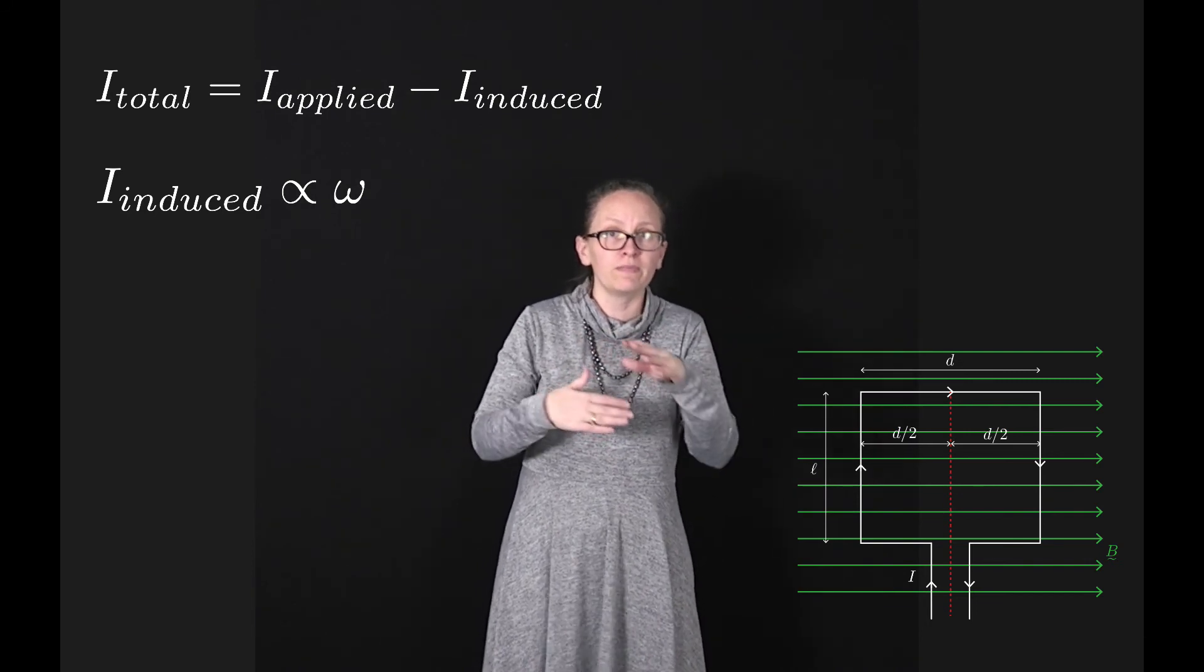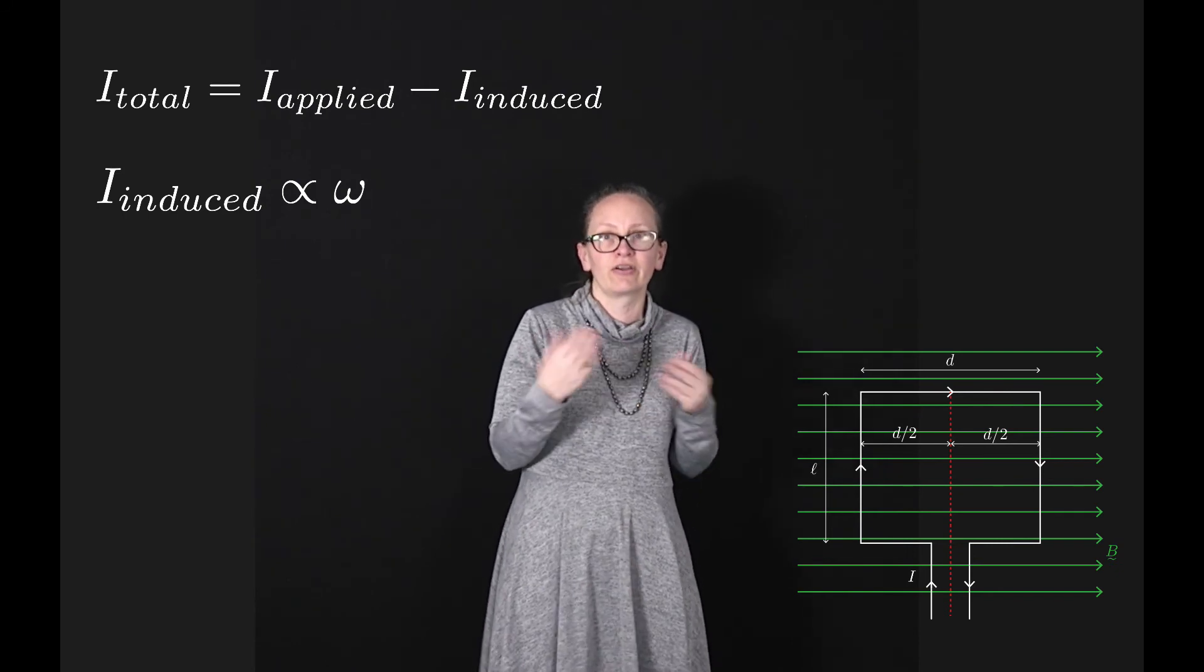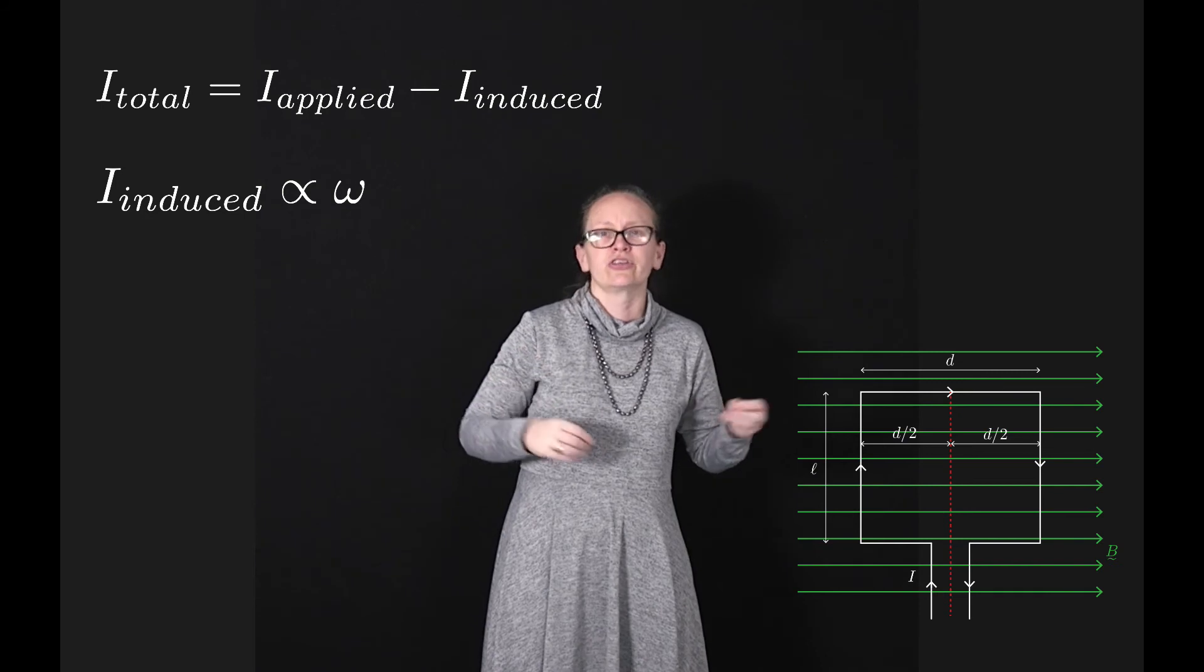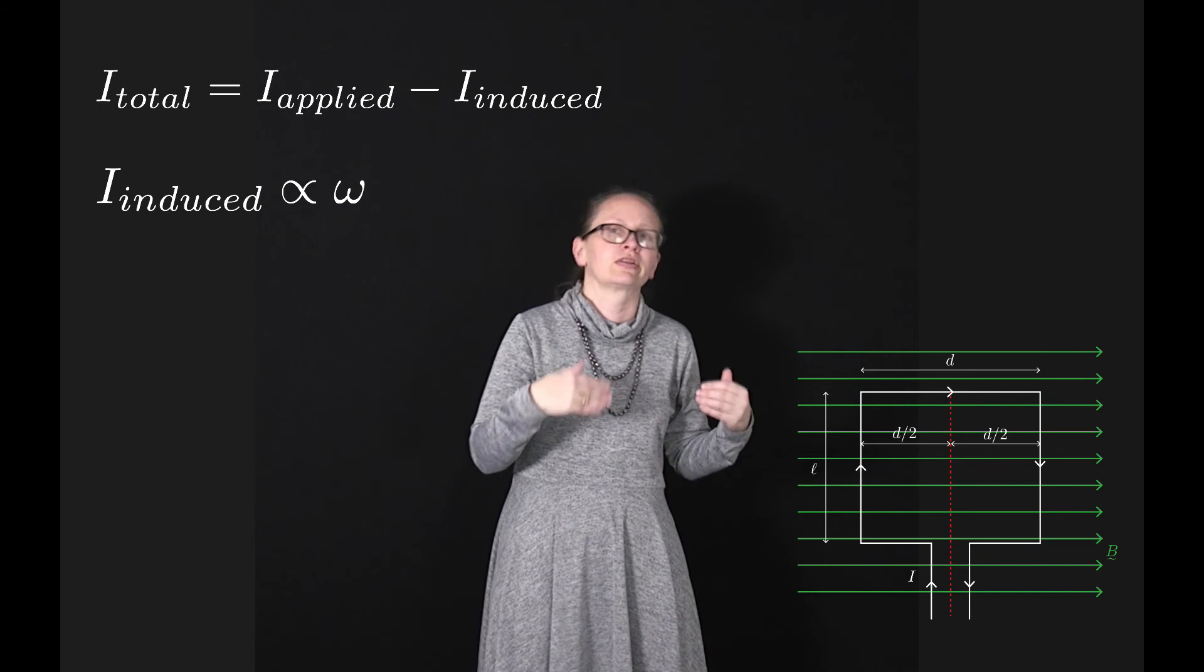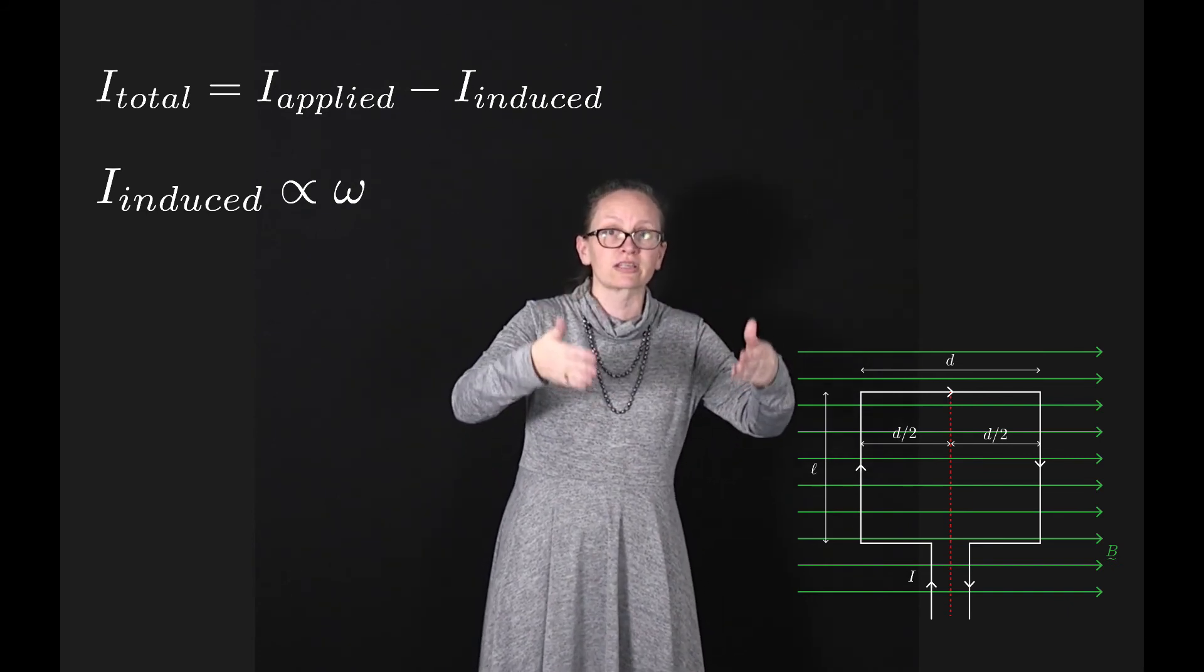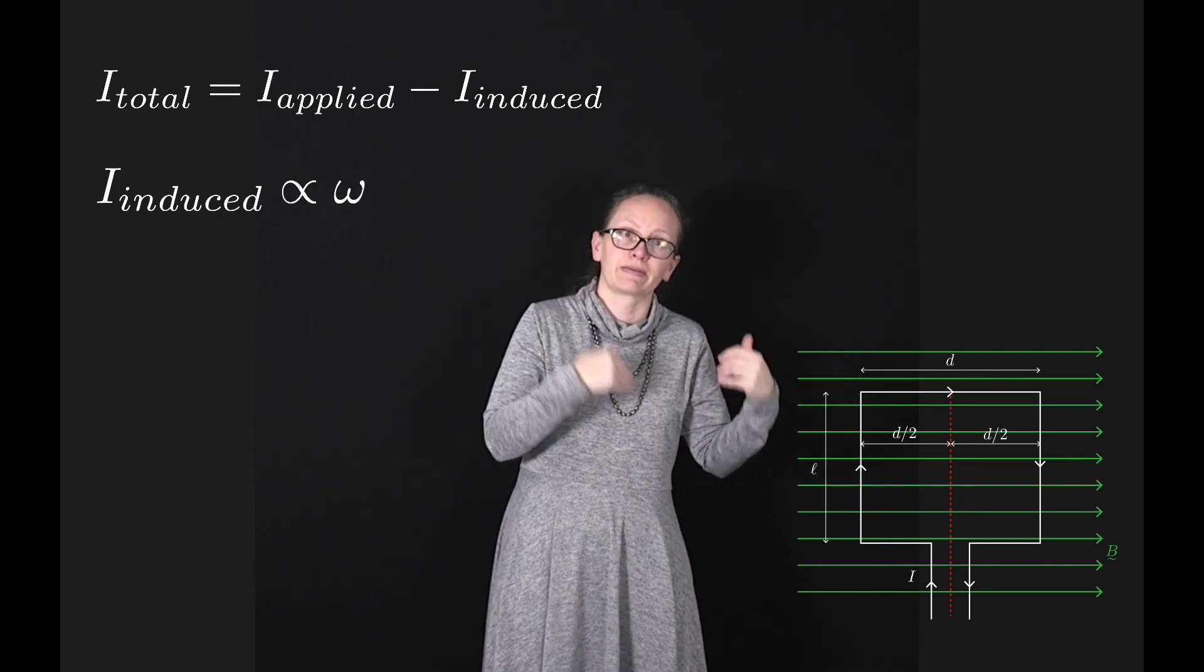This needs to be accounted for in the design because at that point we'll have a much higher current flowing through our loop, and if we have a really high current, the wire will overheat. We need to make sure there's some way to reduce the current at the start before the induced current is well established opposing the applied current.